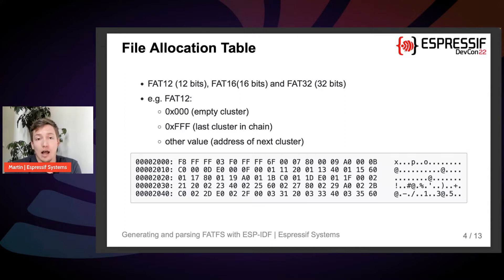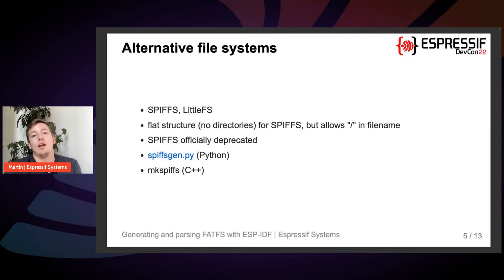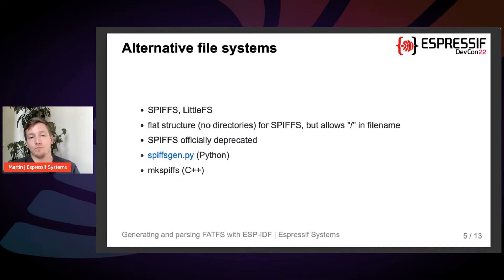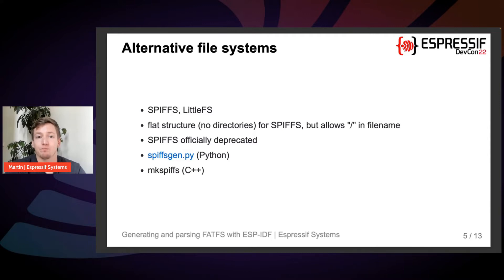Other frequently used file systems for embedded development include SPIFFS and LittleFS, an improved descendant of SPIFFS. There is not much support for LittleFS yet, and SPIFFS is officially deprecated and lacks a directory structure by design. You can still use our tools for generating a SPIFFS partition — either the Python tool SPIFFSgen.py or the C++ tool MK-SPIFFS.